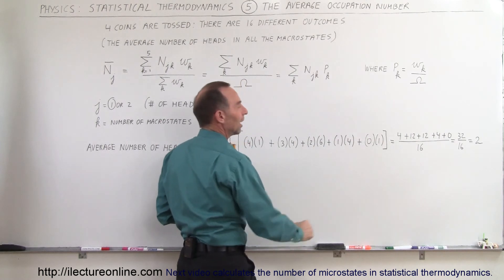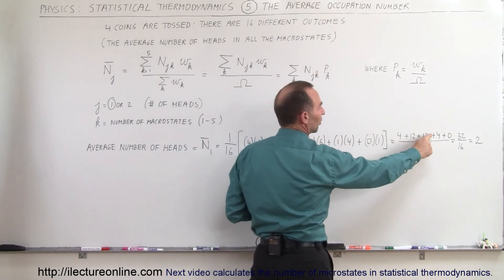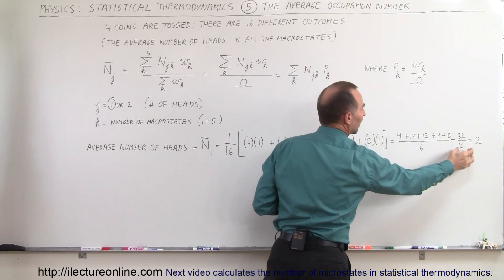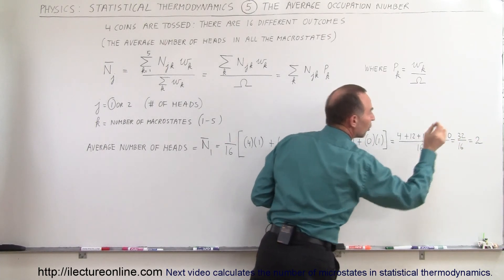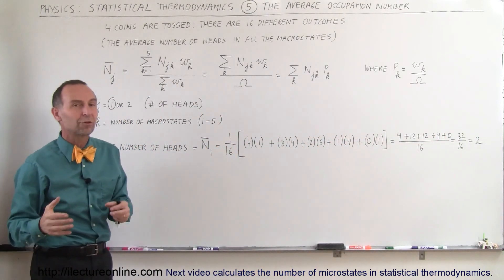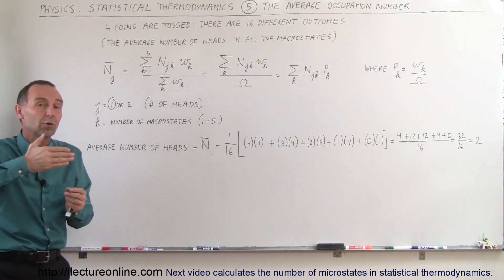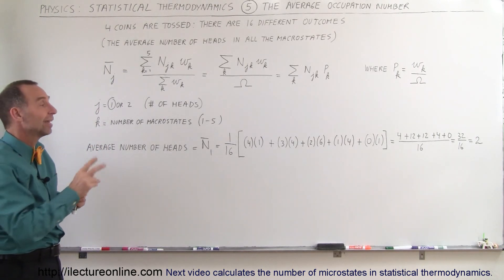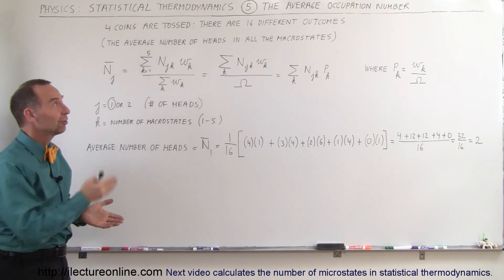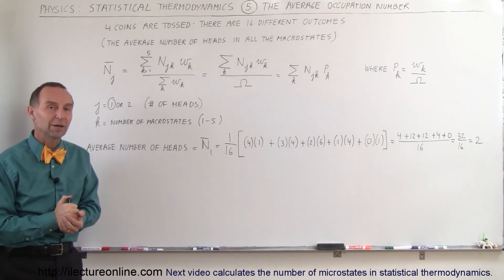Going to the calculation, we get 4 plus 12 plus 12 plus 4 divided by 16, or 32 divided by 16, which equals 2. This means the average number of entities with heads across all five macrostates is 2 coins with heads. And that is how we find the average occupation number.